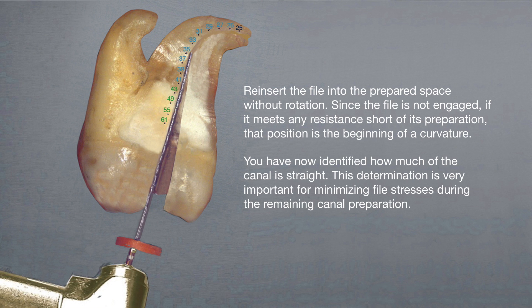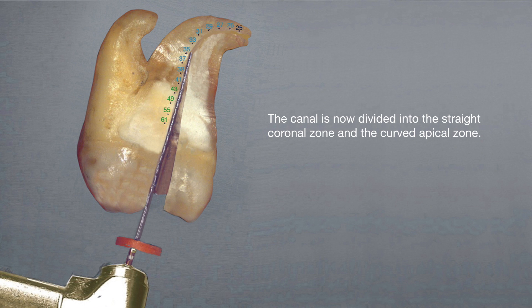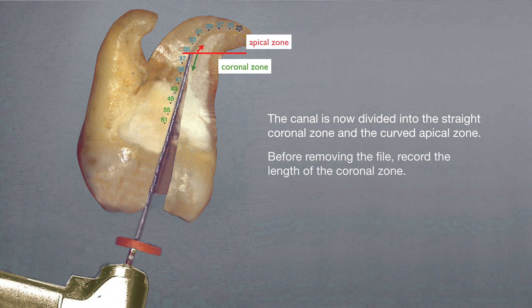You now have identified how much of the canal is straight. This determination is very important for minimizing file stresses during the remaining canal preparation. The canal is now divided into the straight coronal zone and the curved apical zone. Before removing the file, be sure to record the length of the coronal zone. In the case of this illustration, the measurement was 15 millimeters.